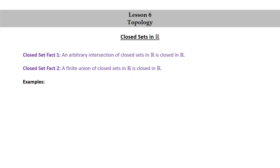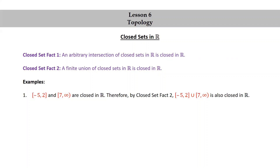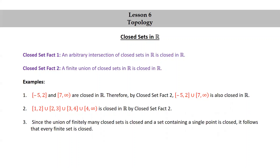Let's look at some examples. The closed interval [-5, 2] and the infinite closed interval [7, ∞) are closed in R. Therefore, by closed set fact 2, [-5,2] union [7, ∞) is also closed in R. Similarly, [1,2] union [2,3] union [3,4] union [4, ∞) is closed in R by closed set fact 2. Since the union of finitely many closed sets is closed, and a set containing a single point is closed, it follows that every finite set is closed.